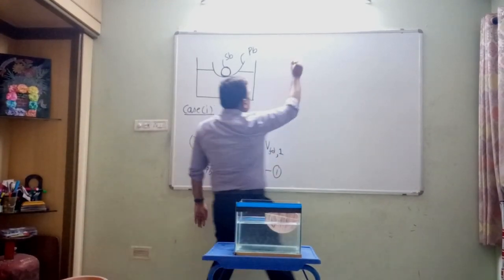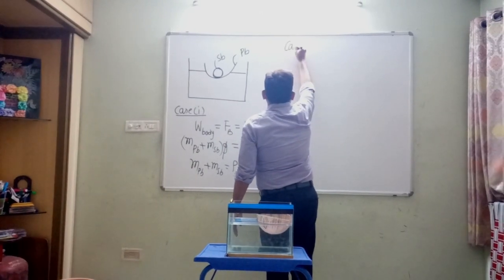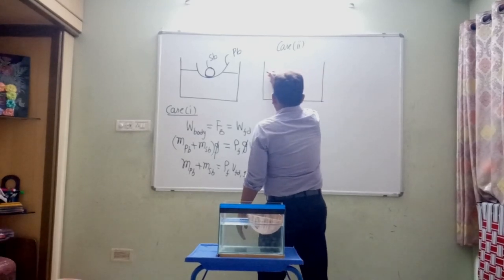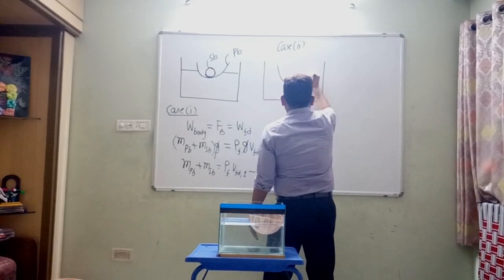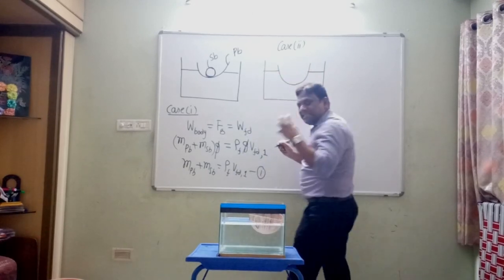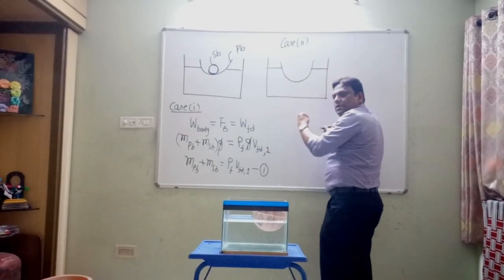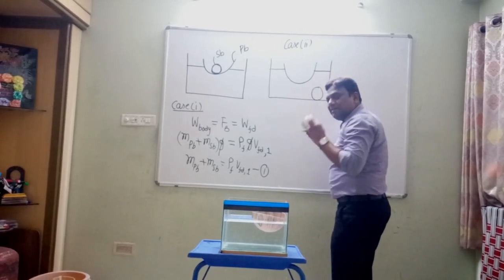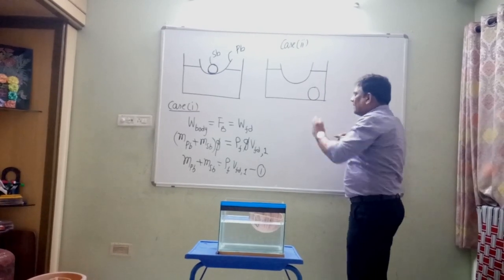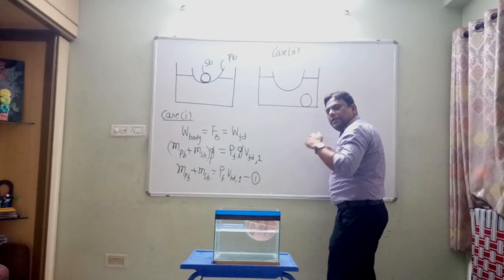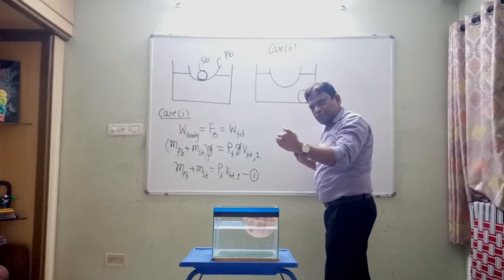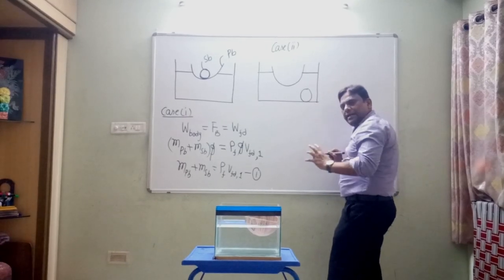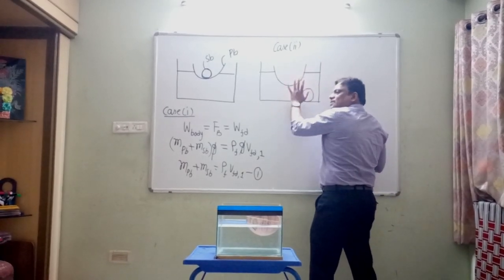Now let's go to case 2. The same situation — we have a plastic bowl. Now the steel ball is dumped in water, so the ball will occupy a position at the bottom. The reason for this is the weight of the steel ball is greater than the buoyancy force, therefore it sinks. Let us try to calculate the volume displaced in this case, and then we will comment on the level.